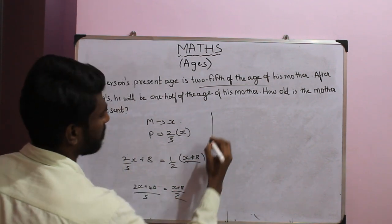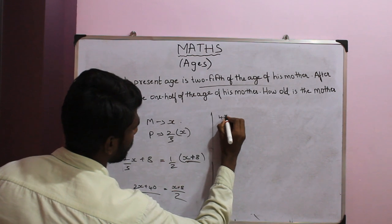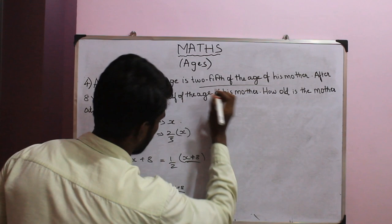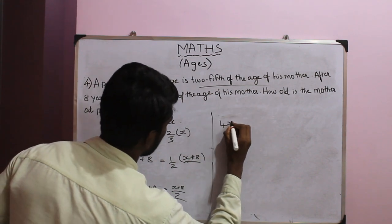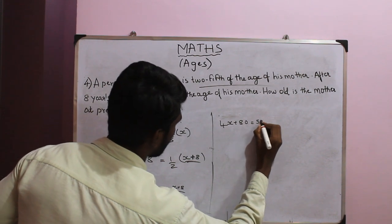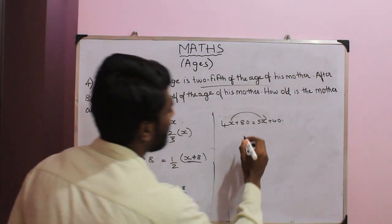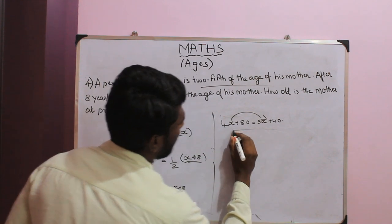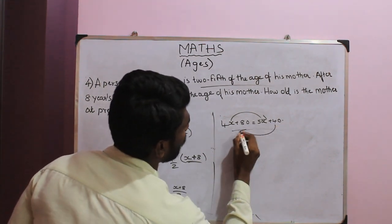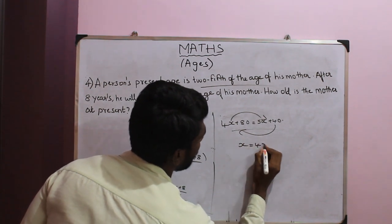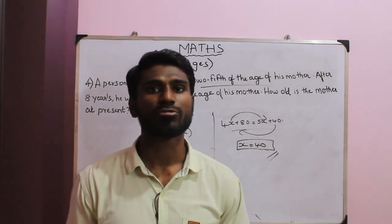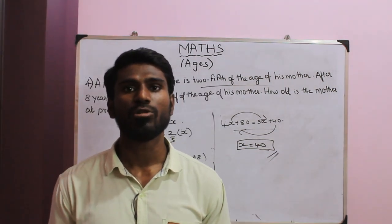Simplifying by cross-multiplying: 4x plus 80 equals 5x plus 40. Solving: x equals 40. The mother's present age is 40 years. That concludes part 1 on the topic of Ages. Part 2 on ratios will follow.